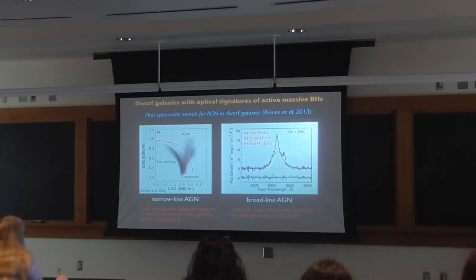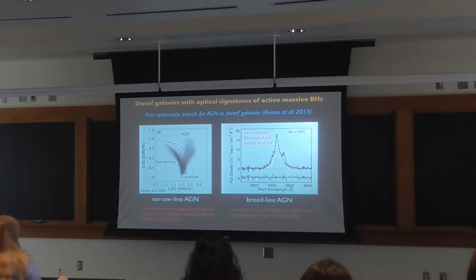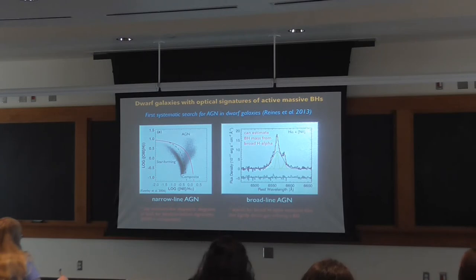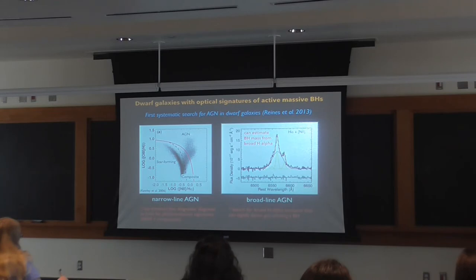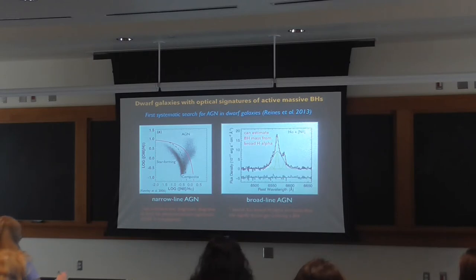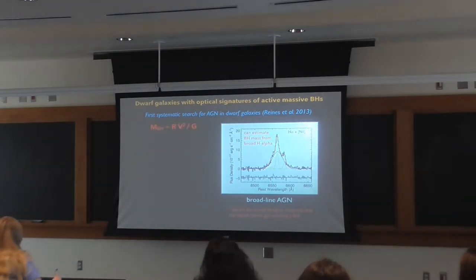In addition to narrow emission lines, I also searched for broad H-alpha emission in the spectrum, because this can signify dense gas orbiting very close to the black hole — just light days away in the broad line region. Line widths can be hundreds to thousands of kilometers per second due to Doppler-shifted radiation along our line of sight. For these so-called broad-line AGN we can use the broad-line kinematics to estimate the mass of the black hole.